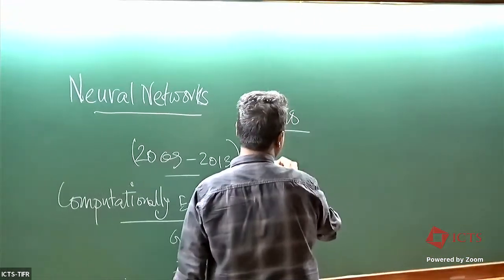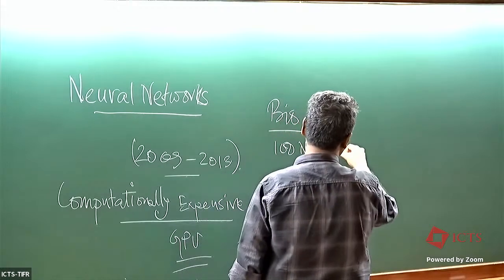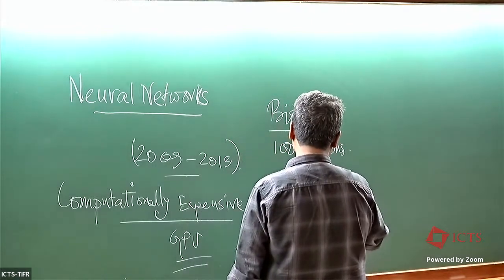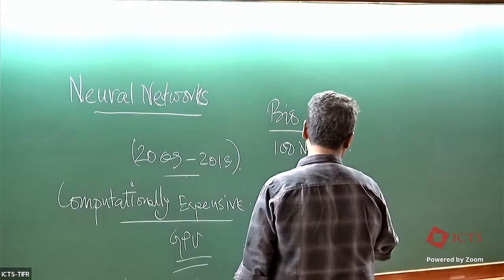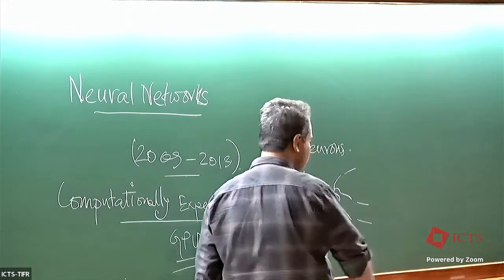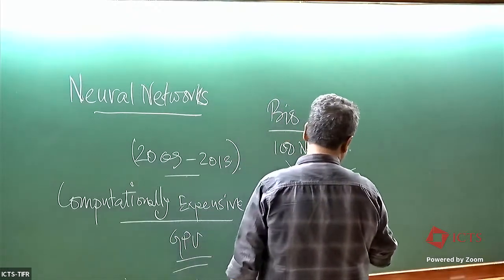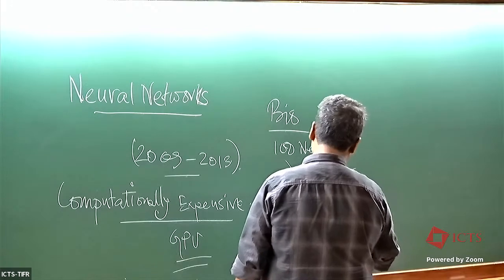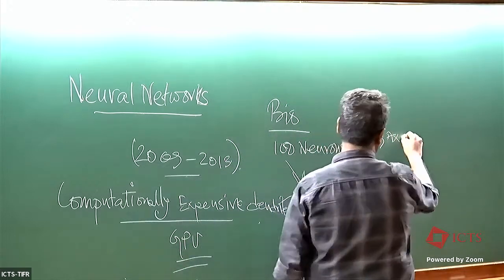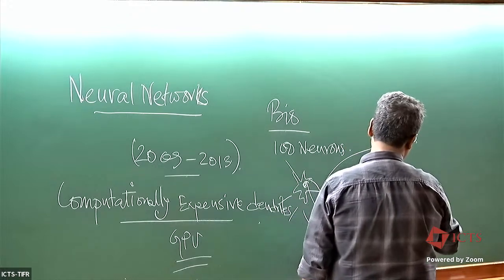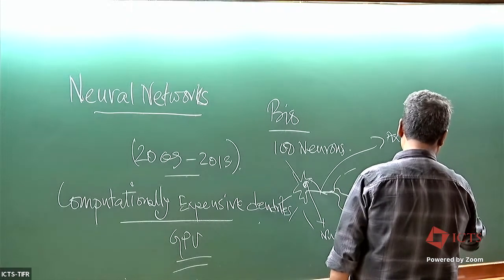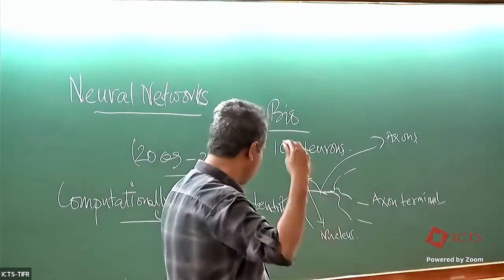We have about 100 billion neurons in the adult human body, and they are connected like this: you have a body, axons — so this is like input and output. It has a nucleus — this is the cartoon of a neuron. You have the nucleus, dendrites, axons, and axon terminals. This is the construction of a neuron.